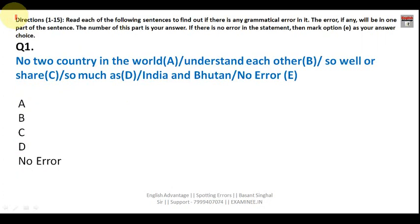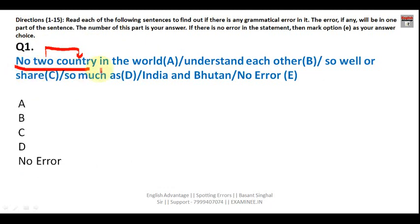Let us get started. This is the first question — you have to find out in which part there is a grammatical error. The sentence reads 'no two country.' If you notice these two words, the word 'two' should always be followed by a plural noun: two books, two pens, two friends — so it should be written as 'two countries.' The error lies in Part A.